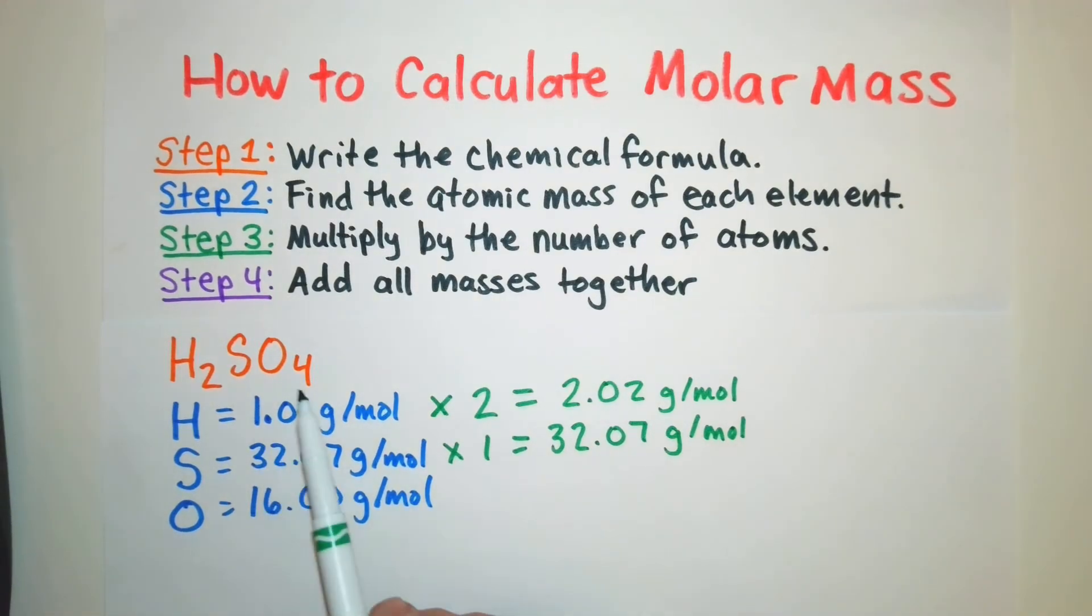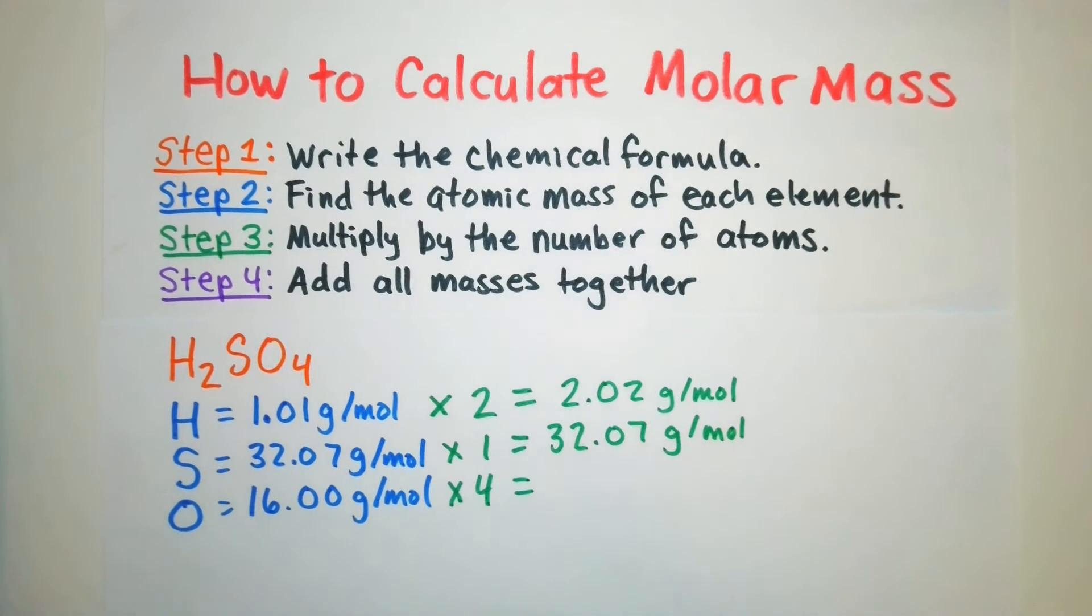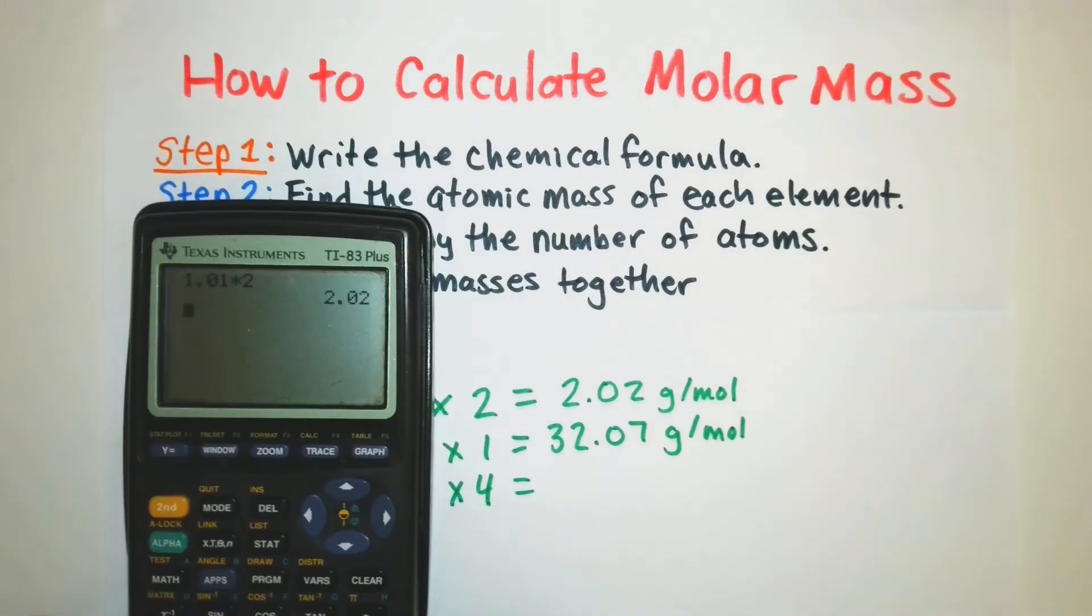Finally for oxygen we have four as a subscript so that means we have four oxygen atoms in that chemical formula so we're going to multiply our 16.00 times four. Put that into the calculator.